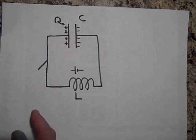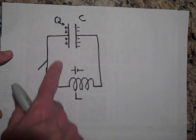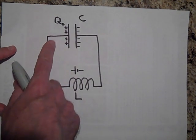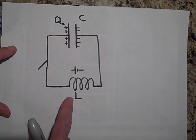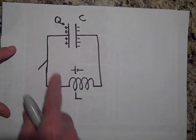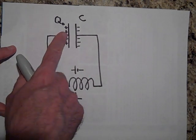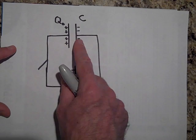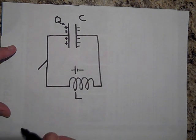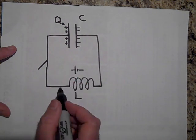At first, it doesn't just zip over there and get neutralized, it takes a moment. But once it gets set up, once the current gets set up, you might think that after a moment it would just die out because once all this charge got over to here, then why would we have current?